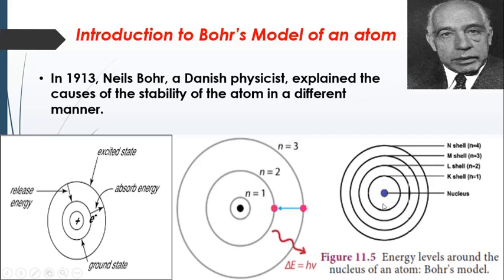The circles represent orbits or energy levels. The first circle is called the K shell, where n = 1. Here, n is called the principal quantum number, which you will learn more about in higher studies. When n = 1, it indicates the K shell; n = 2 indicates the L shell; n = 3 is the M shell; and n = 4 is the N shell. This naming system was given by Niels Bohr.